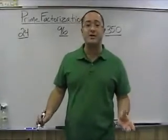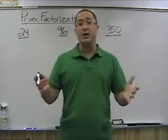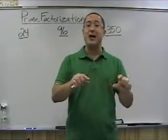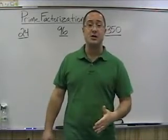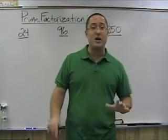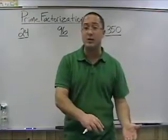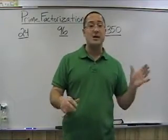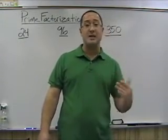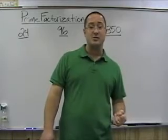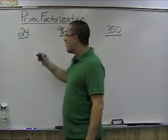Prime factorization of numbers means breaking a composite number down into its smallest pieces — the prime numbers that multiply together to make that number. That's why it's called prime factorization. It sounds difficult, but it's not if you go step by step. Follow along in the book, Chapter 5 Lesson 1, and let's work through some examples.